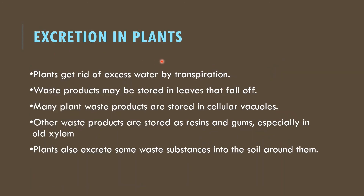Excretion in plants: plants get rid of waste products in several ways. Excess water is lost through transpiration from the aerial parts. Waste products can be stored in leaves that will fall off when they are dry, or stored in cellular vacuoles, or in the form of resins and gums. Some waste products are also sent into the soil around them. This is how plants get rid of their excretory or waste products.